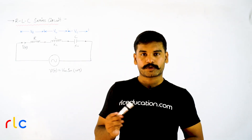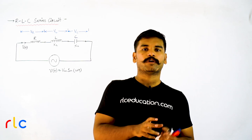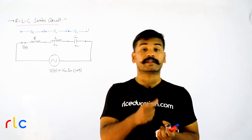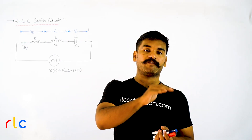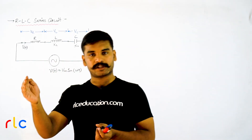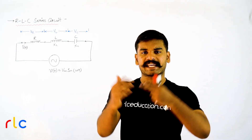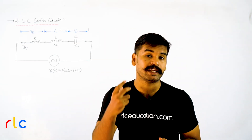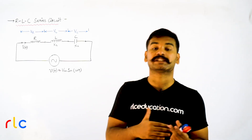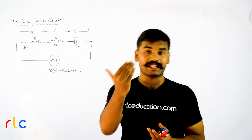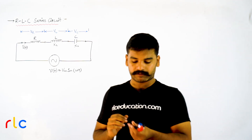Hi friends, this is Nikhil. After the last videos, we studied the effect of placing a resistor, inductor, and capacitor individually in an AC circuit. We also placed a combination of RLC in the circuit and we saw how the phase angle between voltage and current — which is the power factor angle — changes, what the impedance angle plus or minus would be, and apparent power and active power.